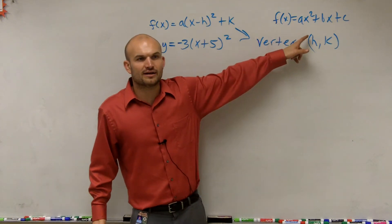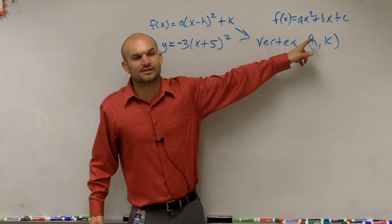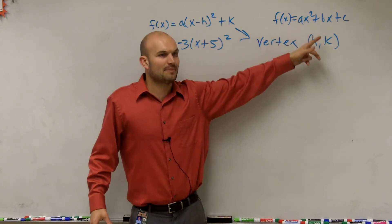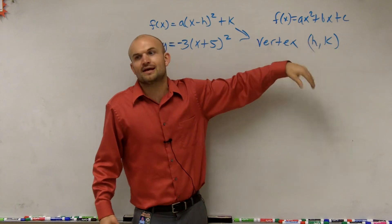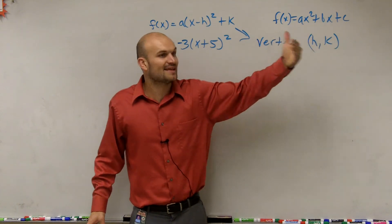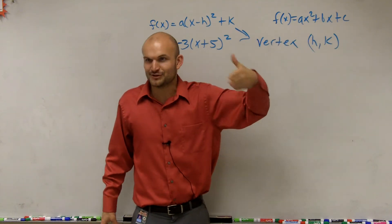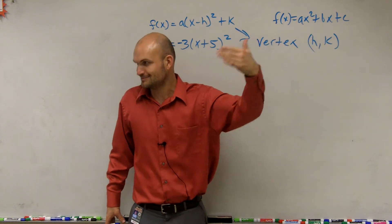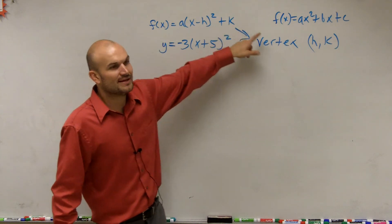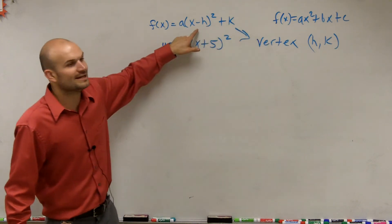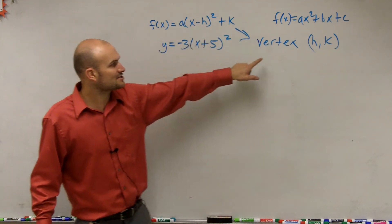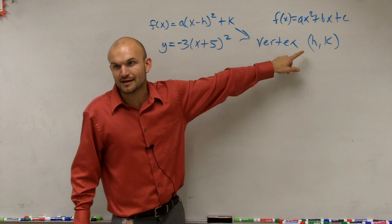Remember trying to find the vertex over here? What'd you have to do? You had to do opposite of b divided by 2a, right? And then plug that value in. That was on that test that some of you still need to keep going. But here, if we can write it into this format, the vertex is just h and k.